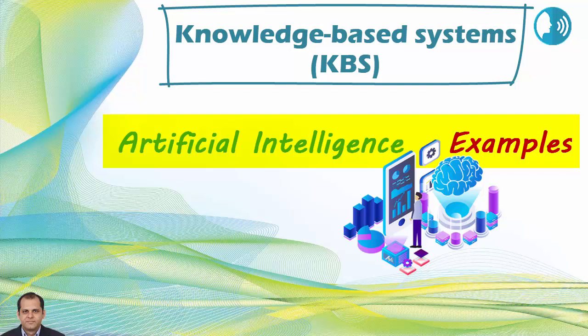Artificial intelligence examples are: 1. Smart assistants like Siri and Alexa. 2. Disease mapping and prediction tools. 3. Manufacturing and drone robots. 4. Optimized, personalized healthcare treatment recommendations. 5. Conversational bots for marketing and customer service. 6. Robo-advisors for stock trading. 7. Spam filters on email. 8. Social media monitoring tools for dangerous content or false news. 9. Song or TV show recommendations from Spotify and Netflix.